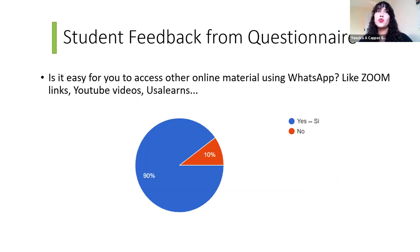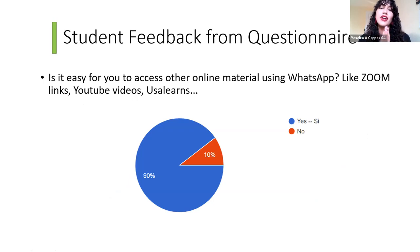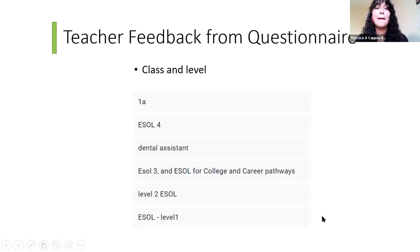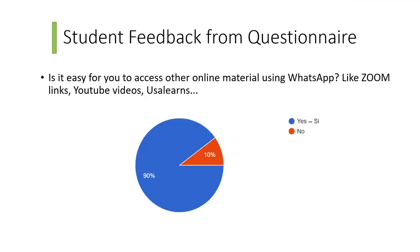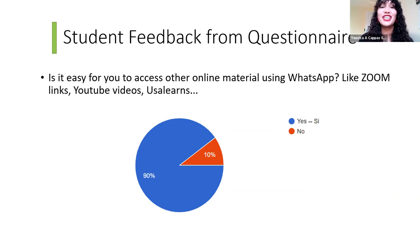This data shows WhatsApp is a comfort zone for students. Starting there keeps anxiety levels from skyrocketing as the world of technology changes. That 10% who had difficulty accessing other online material through WhatsApp could very well be related to phone size or internet bandwidth rather than WhatsApp itself — and that 10% was still able to complete the Google Form sent through WhatsApp.